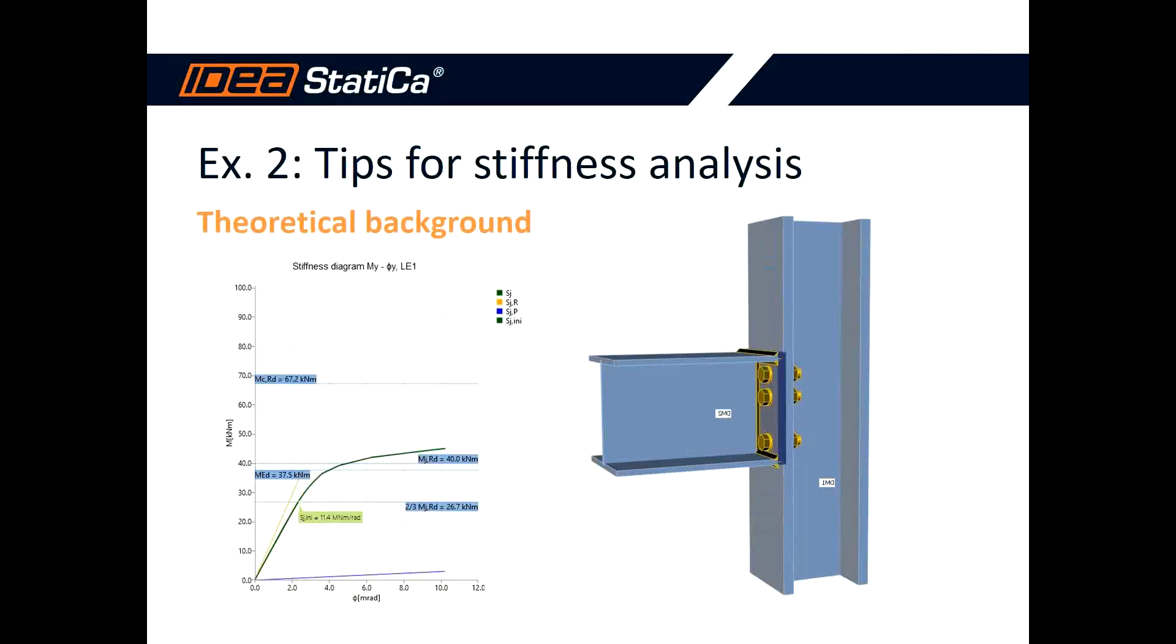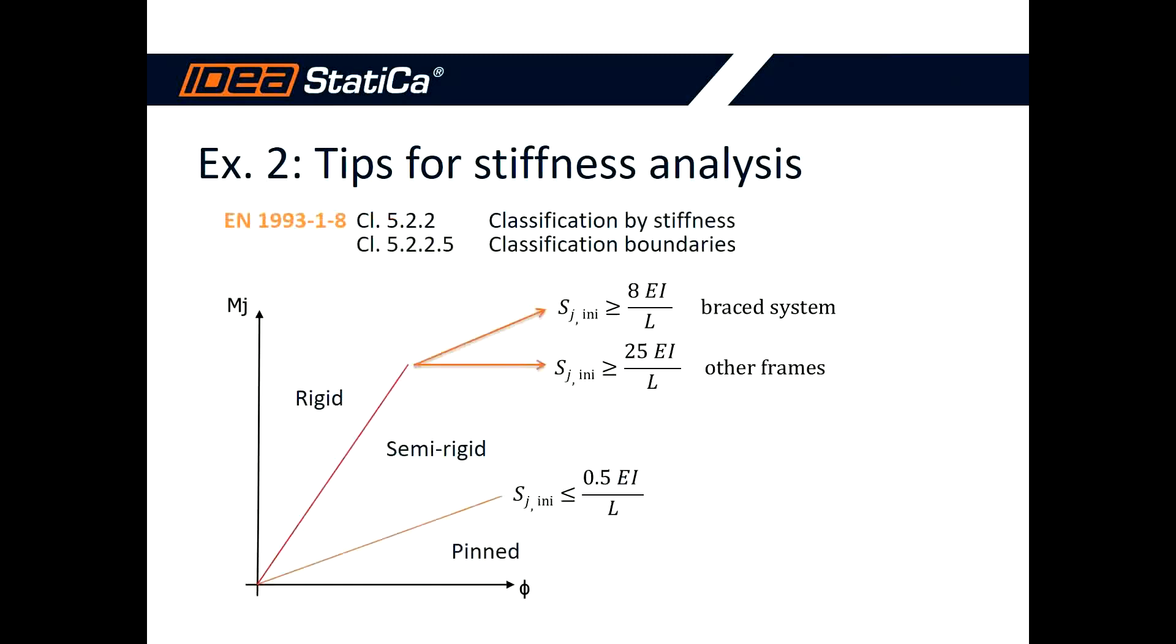We will continue with the theoretical background for tips for stiffness analysis. For the classification, we are using the procedure from Eurocode EN 1993-1-8, Clause 5.2.2 and 5.2.2.5, covering classification by stiffness and classification boundaries.